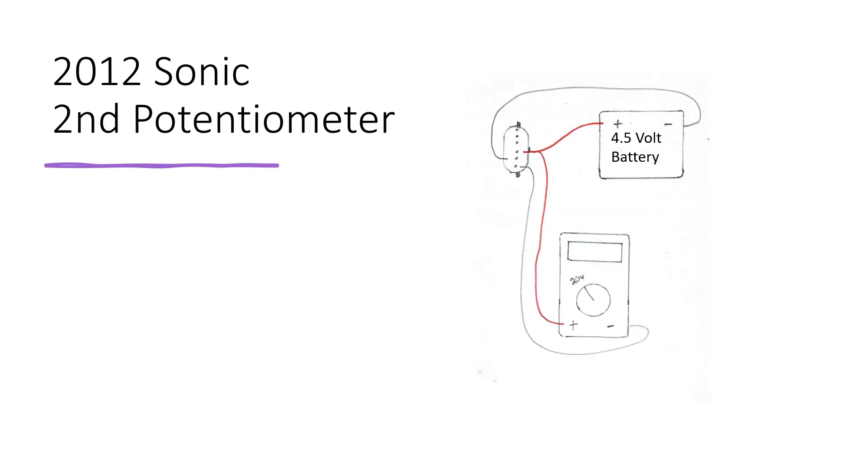Second potentiometer: disconnect everything and you're going to connect the positive from the batteries and the multimeter to this third middle pin again, but it's going to be the bottom one. The negative from the battery is going to connect up to this second from the bottom pin and the negative from the multimeter is going to connect up to the bottom pin.